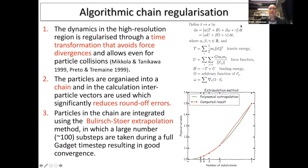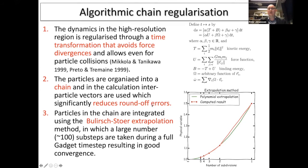The algorithmic regularization avoids the force divergence in the equations of motion by doing a time transformation — developed by Mikkola, Tanikawa, Preto, and Tremaine (1999). Particles are organized into a chain to reduce roundoff errors in inter-particle vectors. Orbits within the chain region are integrated at very high precision using Bulirsch-Stoer extrapolation. For each GADGET timestep, particles within the chain region take hundreds of small sub-steps, then report back to the GADGET code which takes a larger timestep.